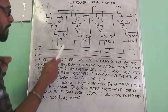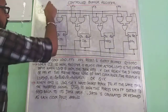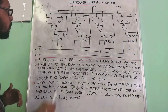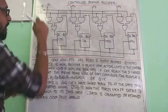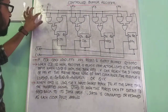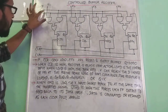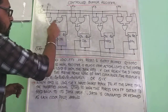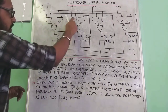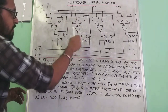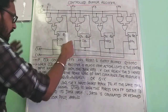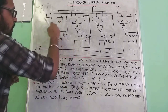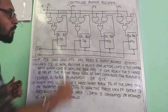This is parallel load, so data will be stored in parallel. We have a load and a load bar. Connected with each flip-flop, we have two AND gates and one OR gate.